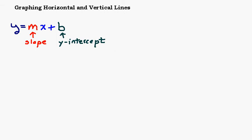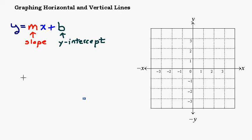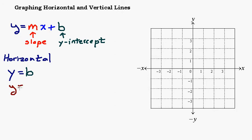These are actually a couple of the easiest lines you can graph, if you know what you're looking for. A horizontal line is going to be in the form y equals b — there's not going to be any x's in there. An example would be y equals 4. We could think of this as y equals 0x plus 4, because 0 times x is just 0, so the slope is 0 and the y-intercept is still 4.